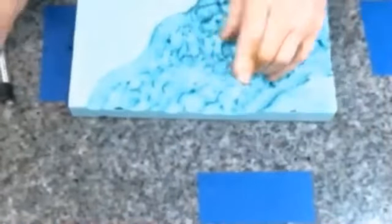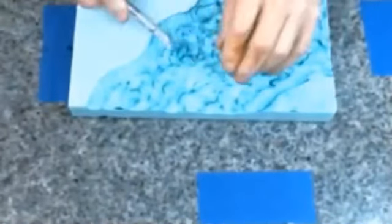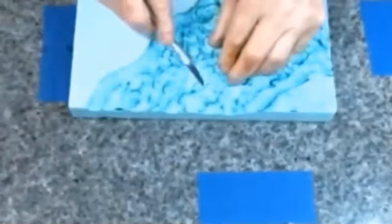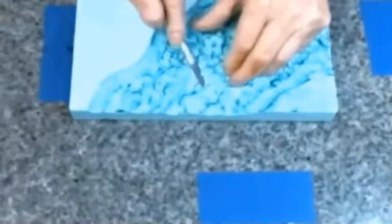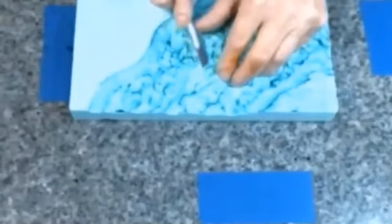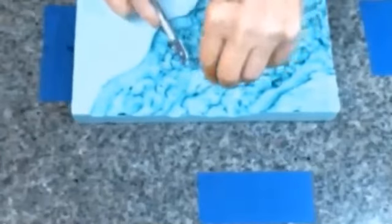If there's any peaks and valleys that stick up or look like they're going to stick up out of the resin, that's easy to fix. Simply take an exacto knife and all we have to do is just take a little bit off, cut it, and then pull it off like that.